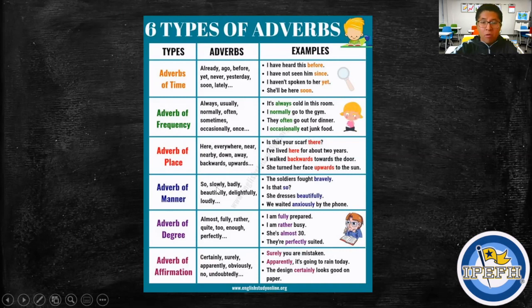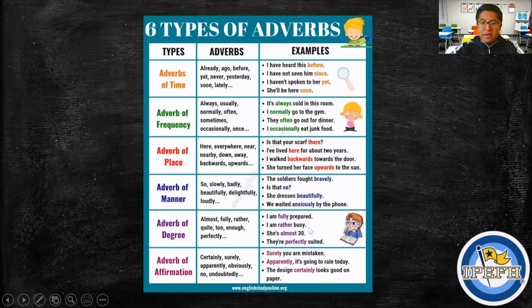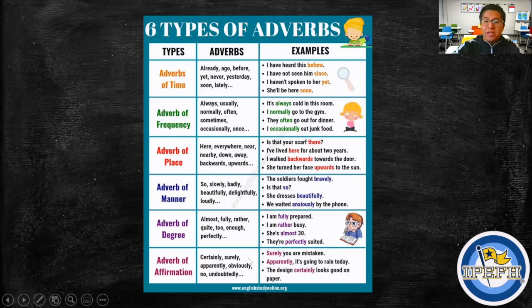Then we have adverbs of manner — such as: loudly, badly, beautifully, etc. Examples: 'The soldiers fought bravely,' 'She dressed beautifully,' 'We waited anxiously by the phone.' Next, adverbs of degree — such as: almost, purely, rather, too, enough, perfectly. Examples: 'I'm rather busy,' 'She's almost ready,' 'They're perfectly sweet.' Finally, adverbs of affirmation — such as: certainly, surely, apparently, obviously, hopefully. Examples: 'Surely you are mistaken,' 'Apparently it's going to rain today,' 'The design certainly looks good on paper.'